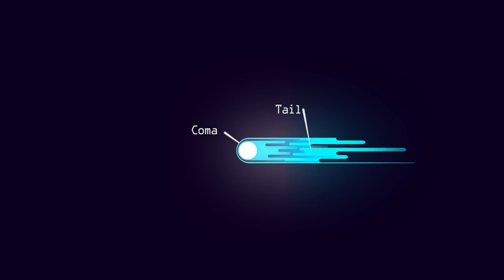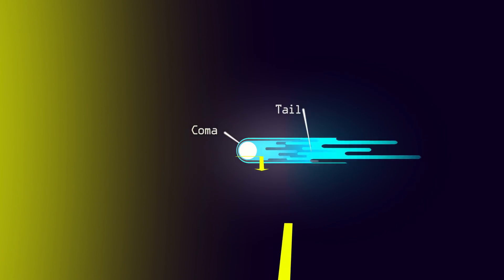The light we see isn't emitted from the comet. Rather, we see the light of the sun reflected in all that gas, dust, and ice.